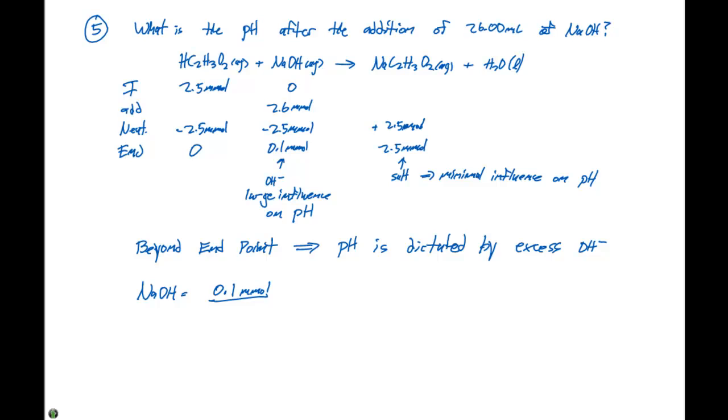We added 26.00 milliliters of sodium hydroxide to 25.00 milliliters of acetic acid, so this has a total volume of 51.00 milliliters. This gives us 1.96 times 10 to the minus 3 molar, which equals the concentration of OH minus ions in excess.